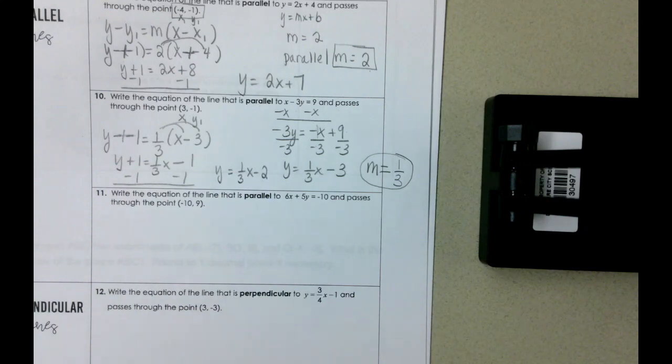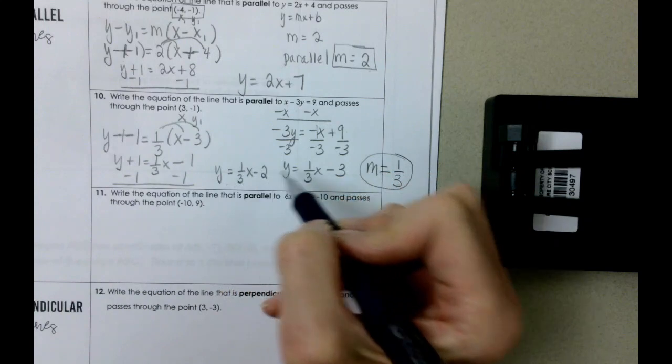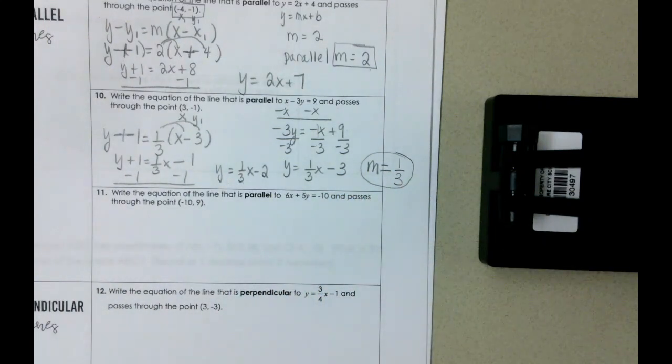Check it on Desmos. Type in x minus 3y equals 9, y equals one third x minus 2. Do they at least look parallel? And I know that looking isn't always a good way to test, but at least it gives you some idea.